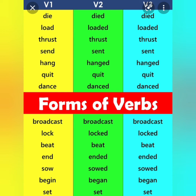I have given the list of verb forms — V1, V2, V3. V1 is the present form, V2 is the past form, V3 is the past participle. Examples: die/died/died; load/loaded/loaded; thrust/thrust/thrust. You see some of the three forms are the same: sent/sent/sent; quit/quit/quit; dance/danced/danced; broadcast/broadcast/broadcast.